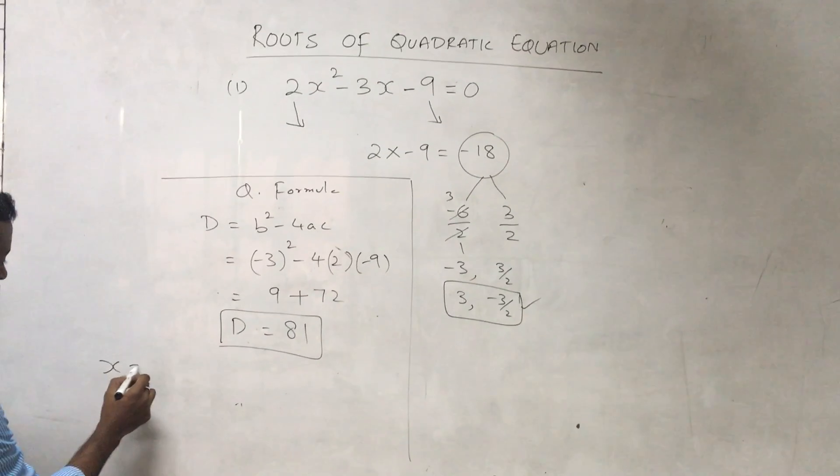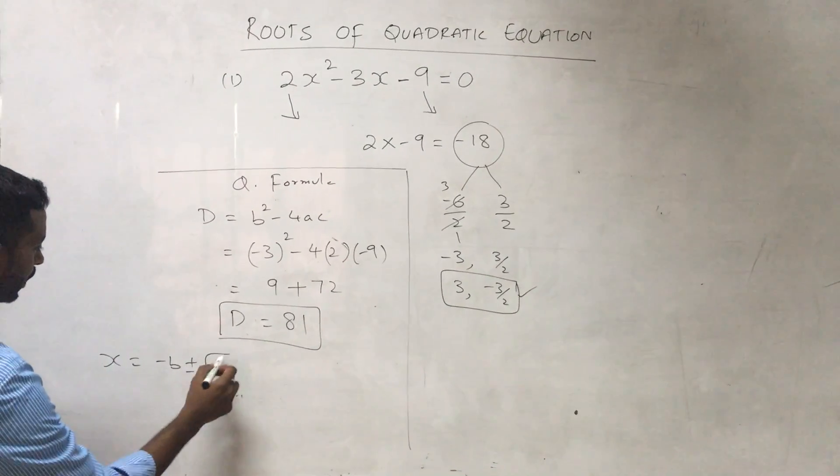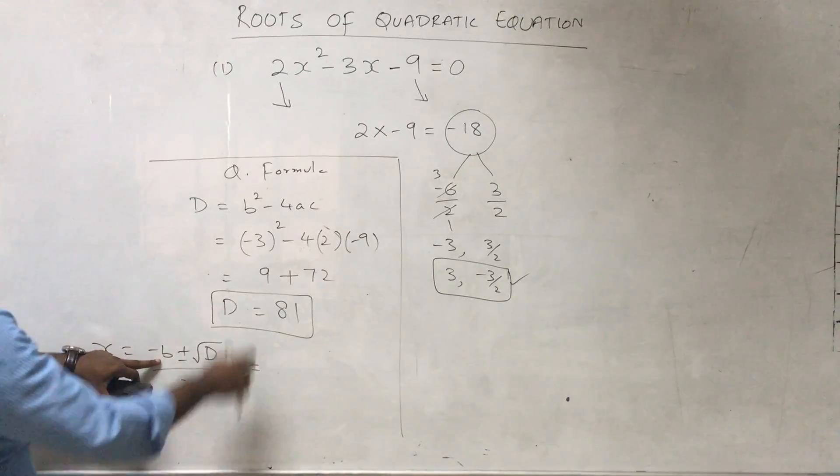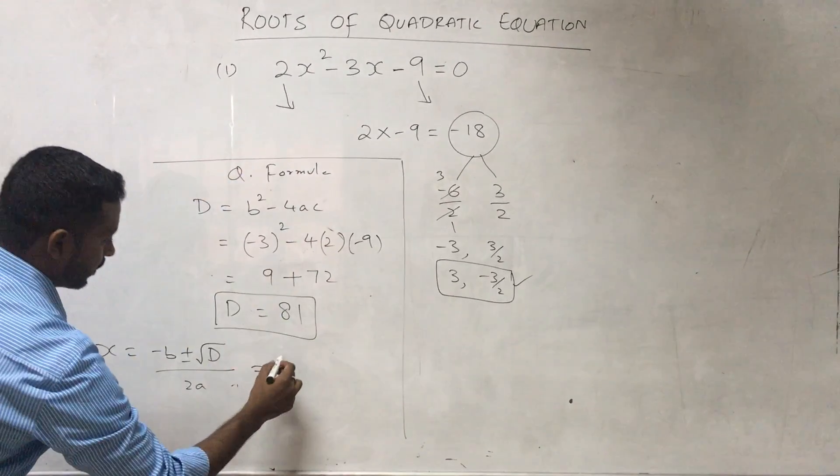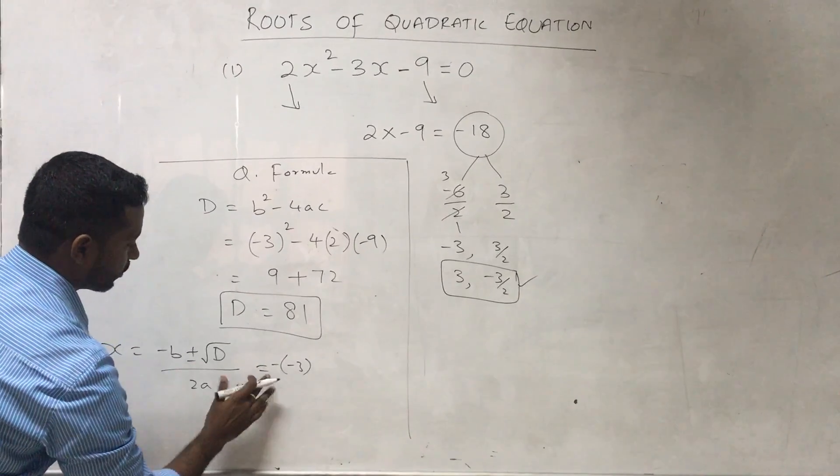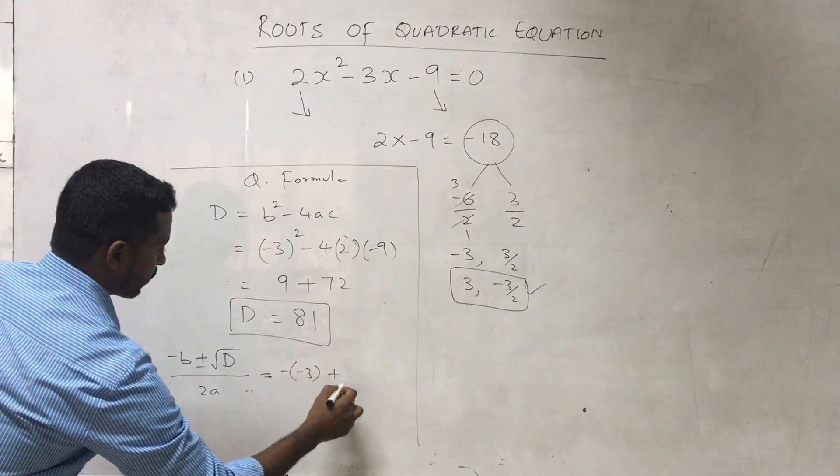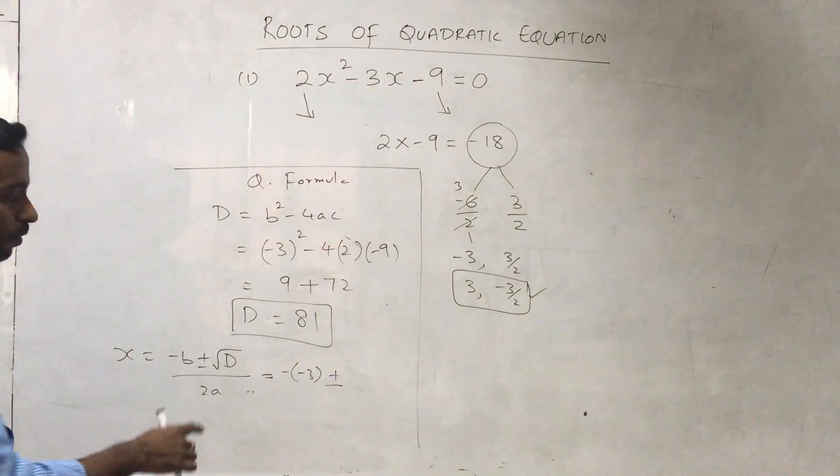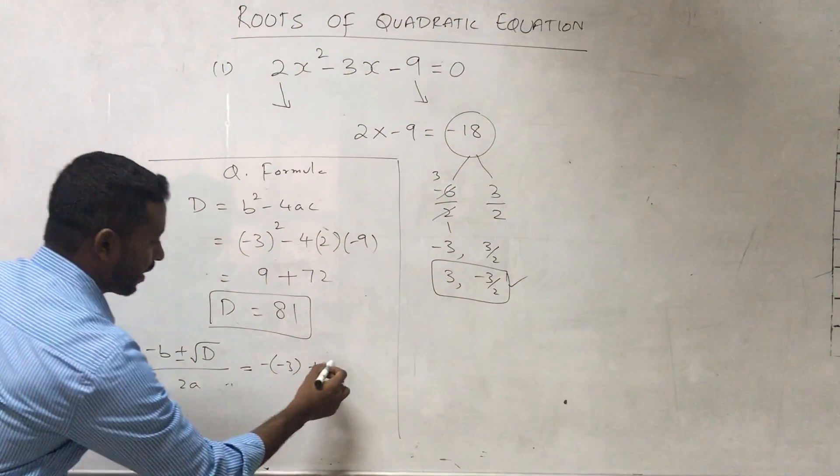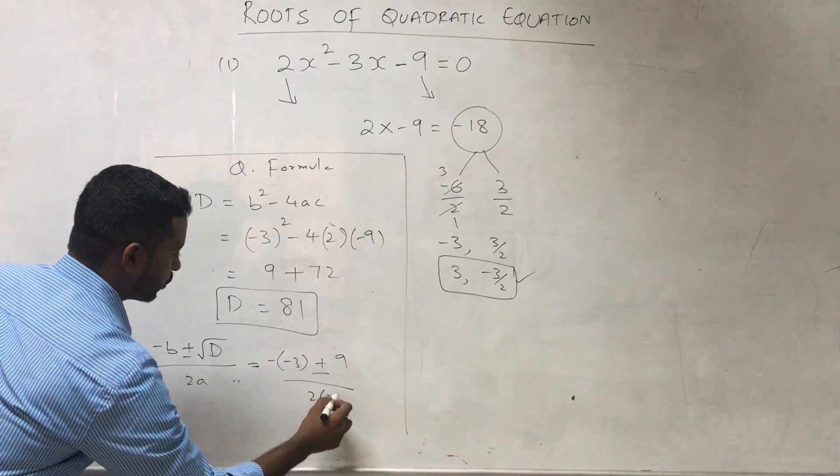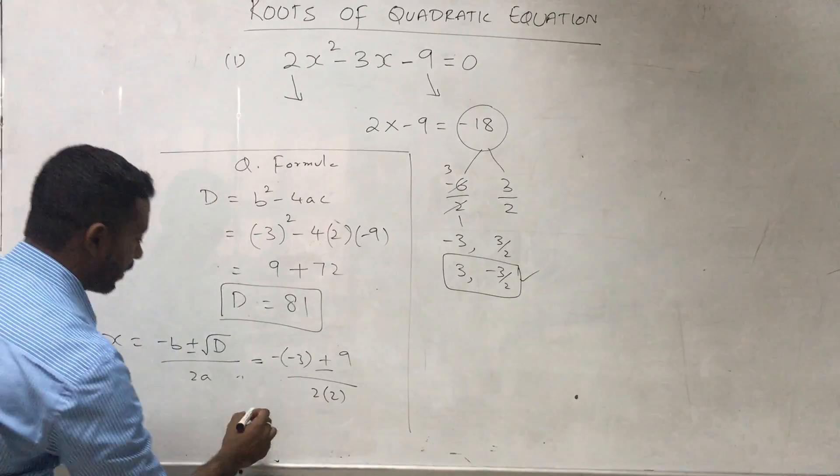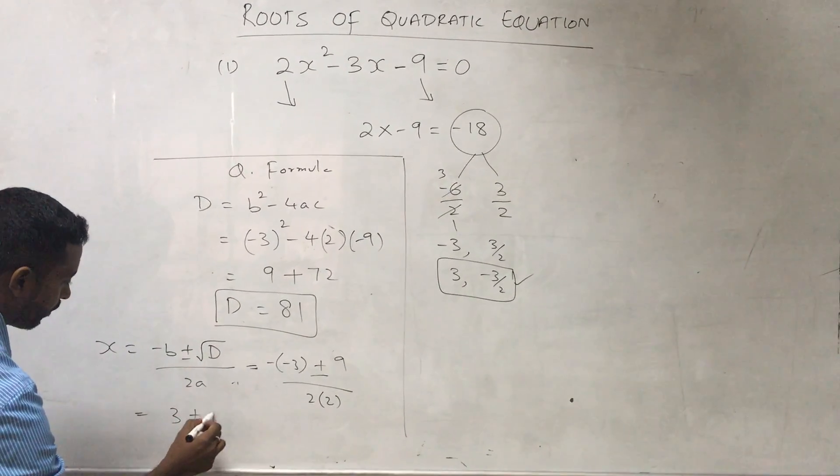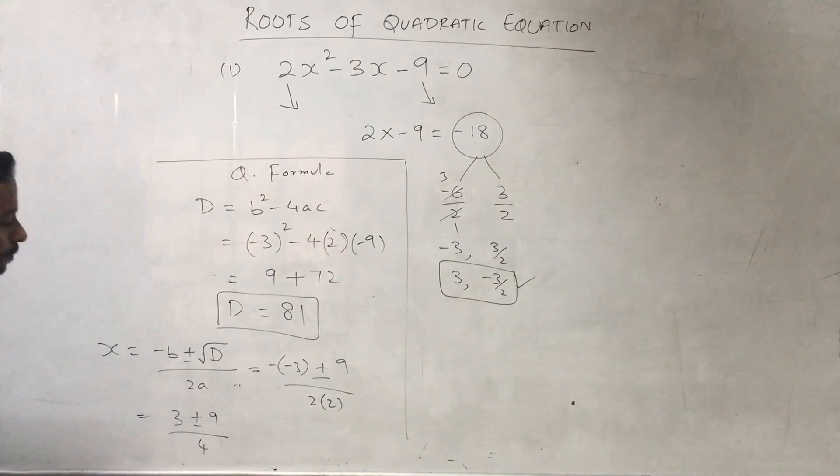The quadratic formula says x equals minus b plus or minus square root of d by 2a. Plug in that: minus of -3 plus or minus square root of 81. Since the square root of 81 is 9, that's 3 plus or minus 9 divided by 2 times 2, which is 4.